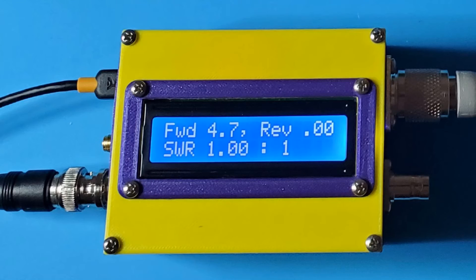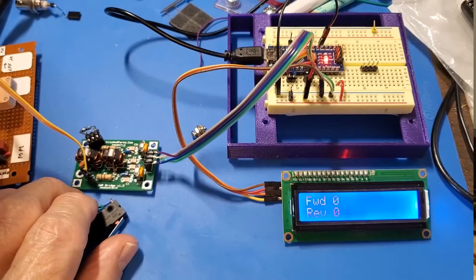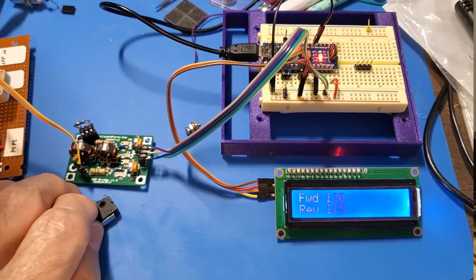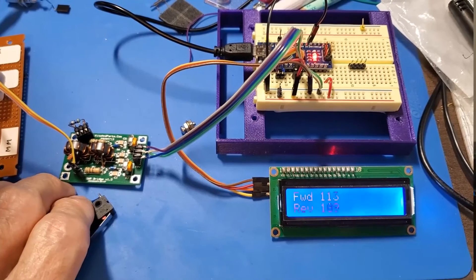Before experimenting with the pixel addressable display, I had used a 16x2, that is a two-line text LCD.